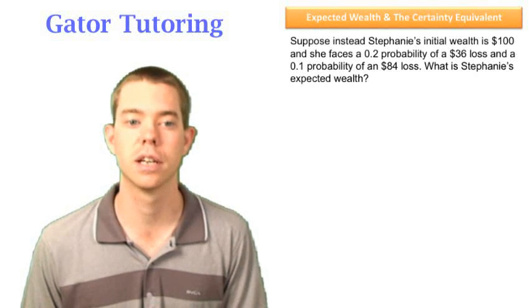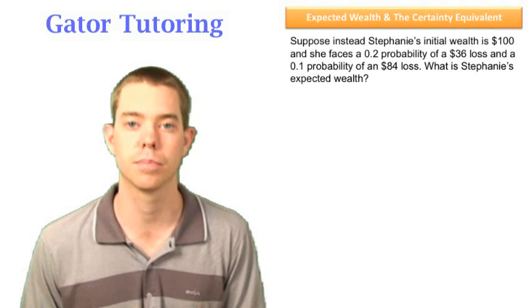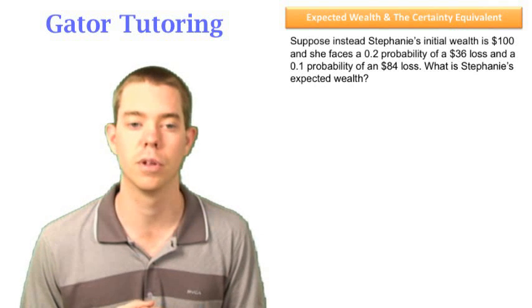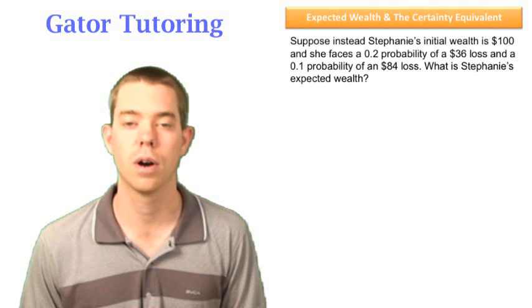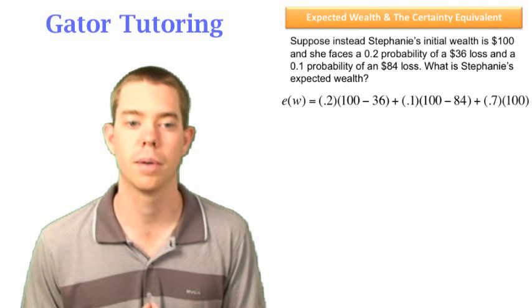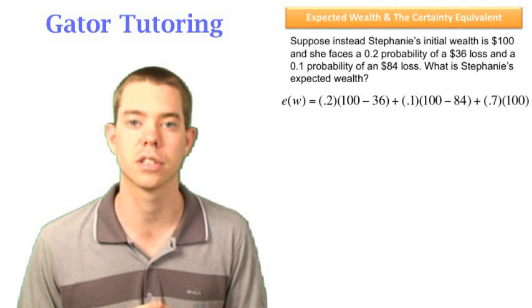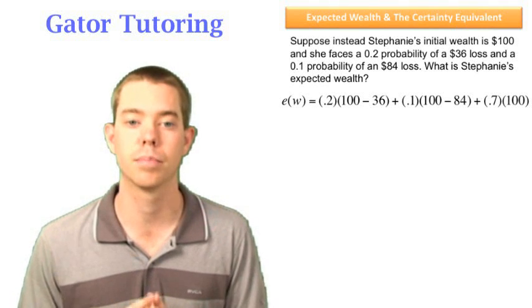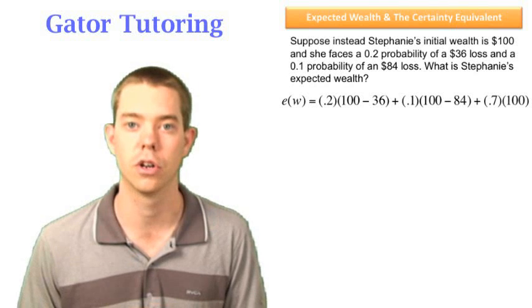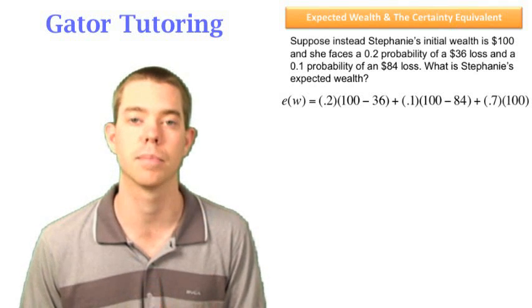The next question says, suppose instead that Stephanie's initial wealth is $100 and she faces a 20% probability of losing $36 and a 10% probability of an $84 loss. What is Stephanie's expected wealth? Well, we know that 0.2% of the time she's going to start with $100 and lose $36. 0.1% of the time she's going to start with $100 and lose $84. It must be that 0.7% of the time she's going to start with $100 and not lose anything, because we have to have all our probabilities adding up to 100%.